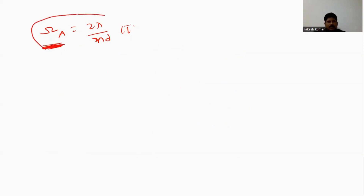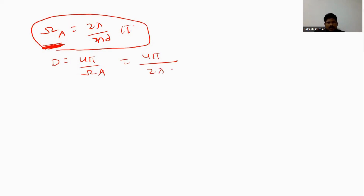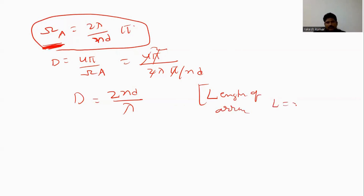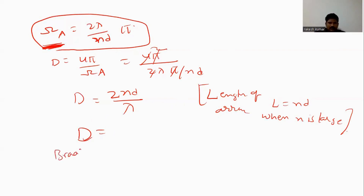So with Ωa equal to 2πλ / Nd, the directivity D equals 4π / Ωa equals 4π divided by (2πλ / Nd), which gives D equals 2Nd / λ. We have already discussed that the length of the array for an N-element broadside array is given as L equals Nd, so D equals 2L / λ.